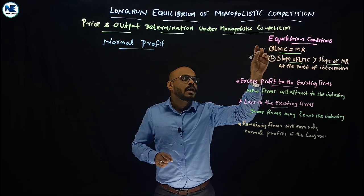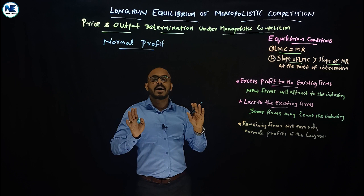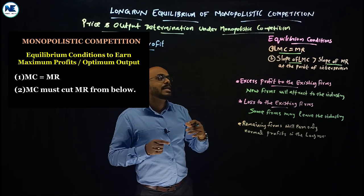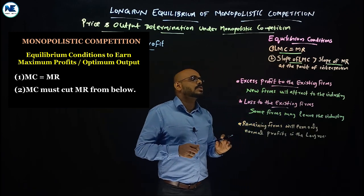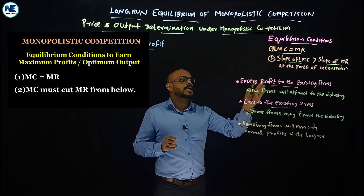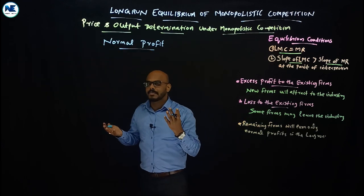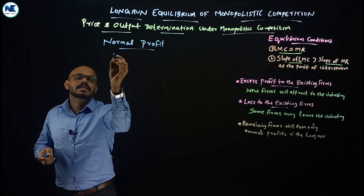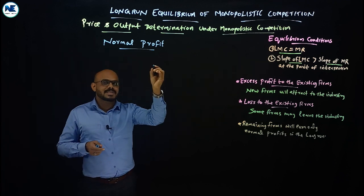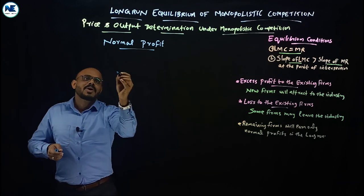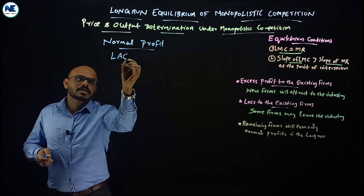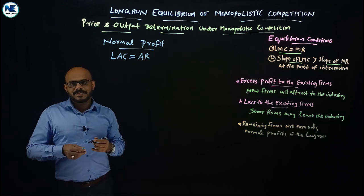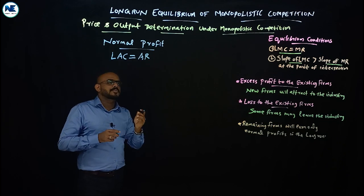The equilibrium conditions for the long run are: first, long run marginal cost is equal to marginal revenue. The slope of long run marginal cost is greater than the slope of marginal revenue at the point of intersection. The second condition for normal profit in the long run is that long run average cost is equal to average revenue, or price.